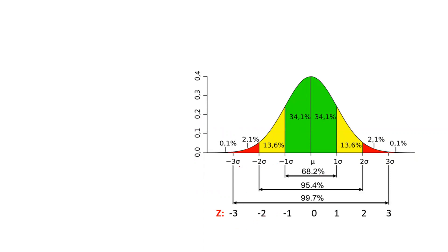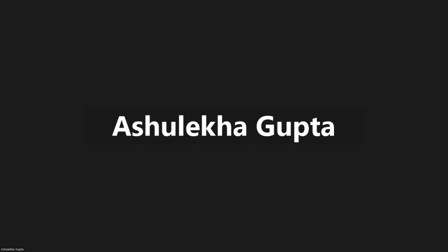So to summarize: 1 sigma covers 68.2% of the data — that is 34.1% on the left side and 34.1% on the right side. Adding the next band gives 95.4%, with an additional 13.6% on each side. Adding the third band gives 99.7%, with an additional 2.1% on each side. That is how 1 sigma, 2 sigma, and 3 sigma work. Thank you, I hope this concept is clear.